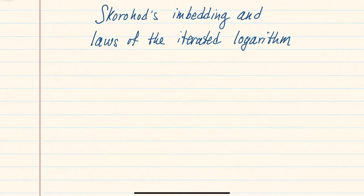In this section we will first prove the Skorokhod embedding theorem, which shows how to embed a random variable into a Brownian motion, and then we will use it to prove the law of the iterated logarithm for sums of iid random variables. The Skorokhod embedding will allow us to reduce that case to the simpler case of the law of the iterated logarithm for the Brownian motion.